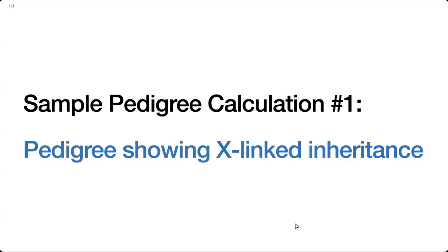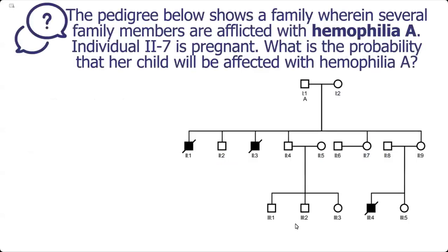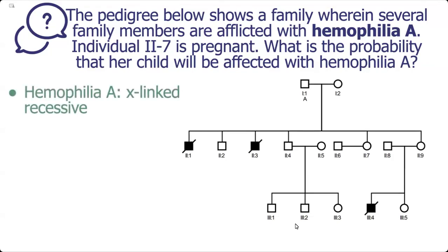For this video, we're going to do a sample probability calculation from a pedigree that is showing X-linked inheritance. The question states that this pedigree shows a family wherein several family members are afflicted with Haemophilia A. Individual 2-7 is pregnant. What is the probability that her child will be affected with Haemophilia A?